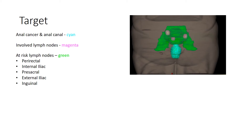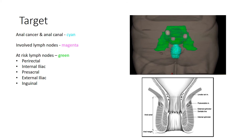The at-risk lymph node regions are the perirectal, internal iliac, presacral, external iliac, and inguinal lymph nodes. The inguinal nodes are included because distal to the dentate line, venous drainage goes through the inguinal and femoral vessels rather than the perirectal vessels. Anything extending below the dentate line — as many anal cancers do — threatens the inguinal lymph nodes, so we cover them and where they drain: the external iliac nodes. Otherwise we follow the perirectal drainage pattern. Data from published series confirms that positive lymph node locations correspond to the entire volume we treat.